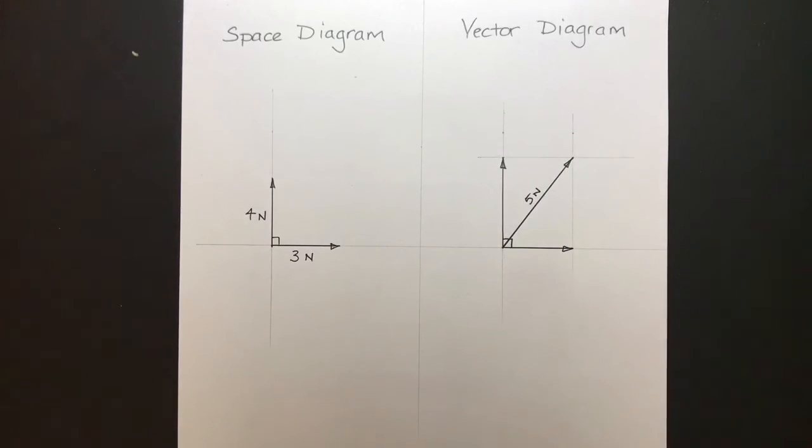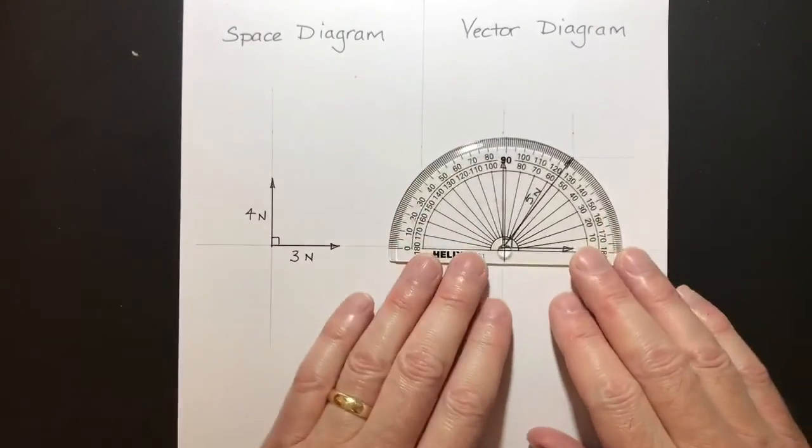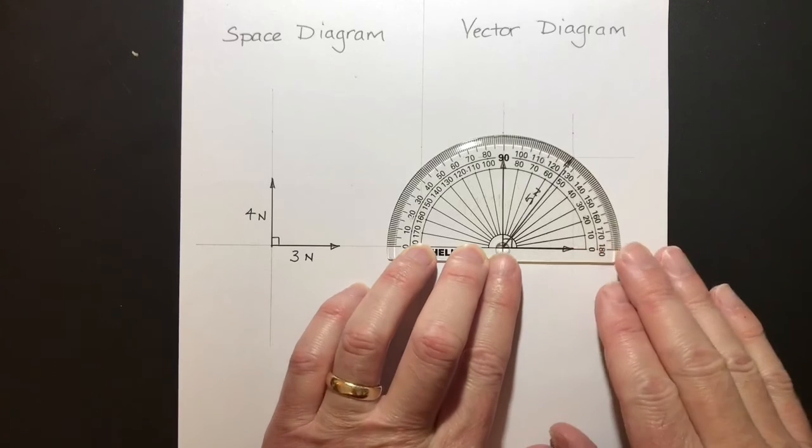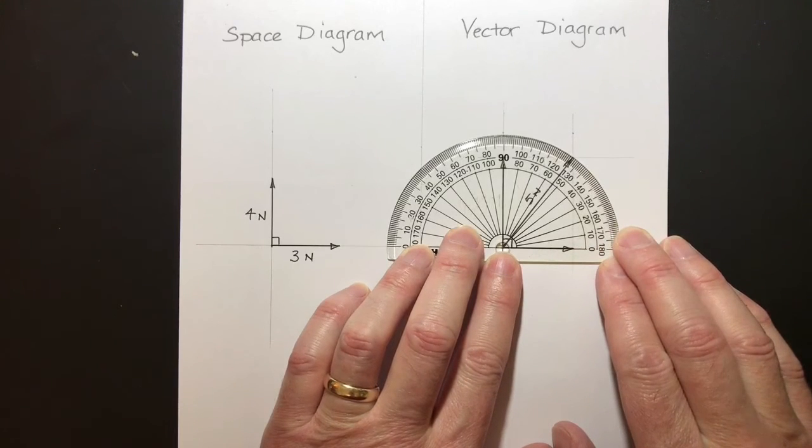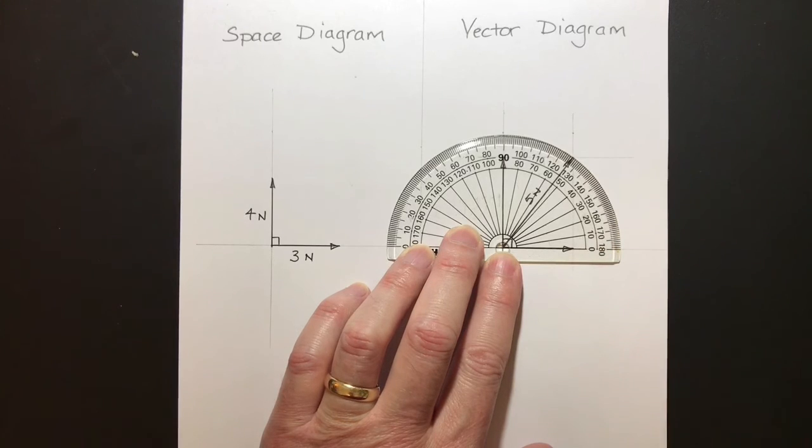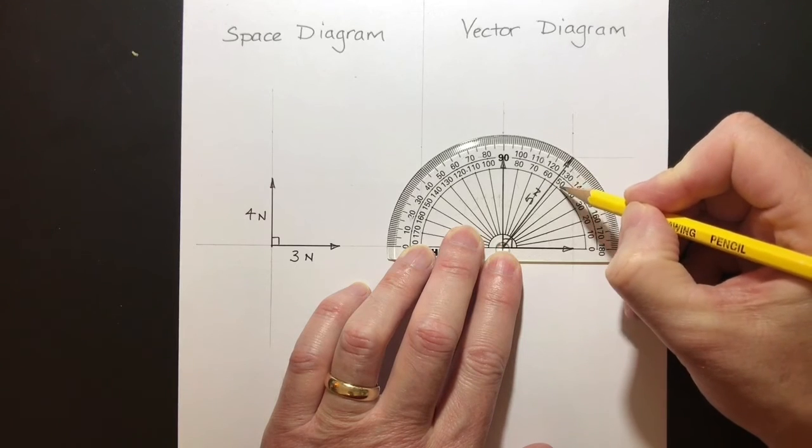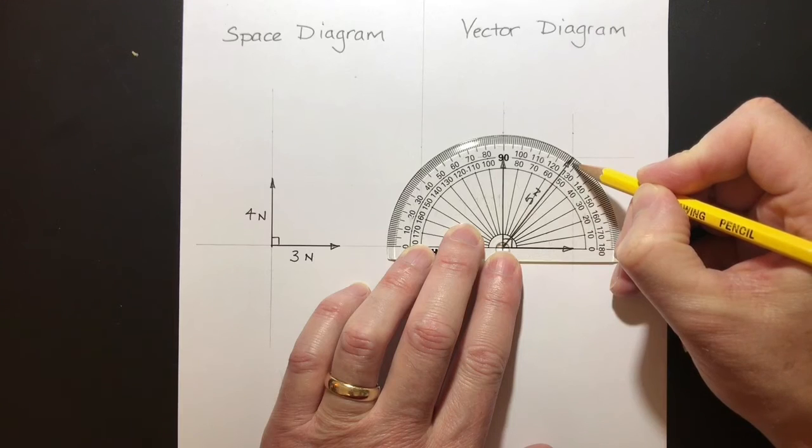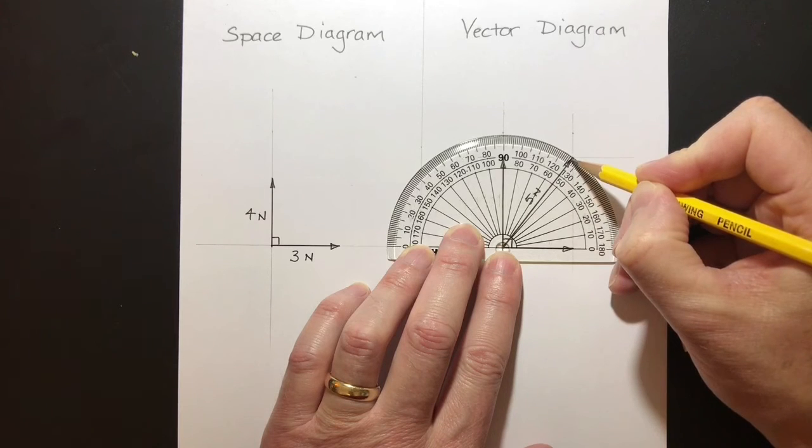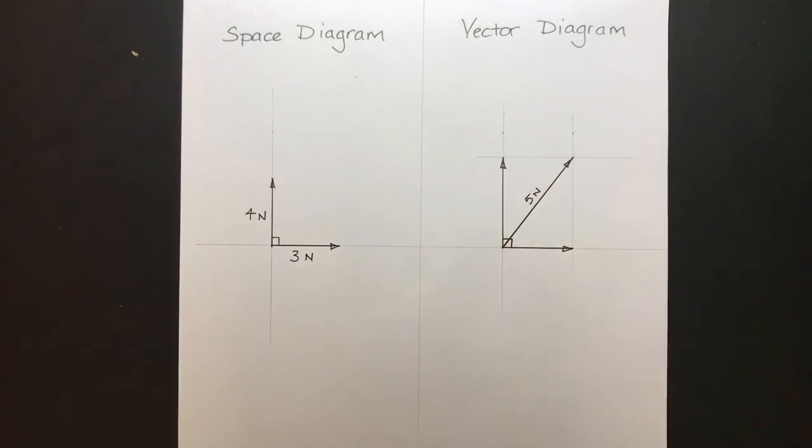And what direction is that force acting in? Let's have a look here. Let's put our protractor very carefully on there like that. And I can see that it's here. If we go round from here, round to 50 degrees. It's more than 50 degrees. It is 50, one, two. It's halfway, maybe closer to 54 degrees there. 54 degrees.